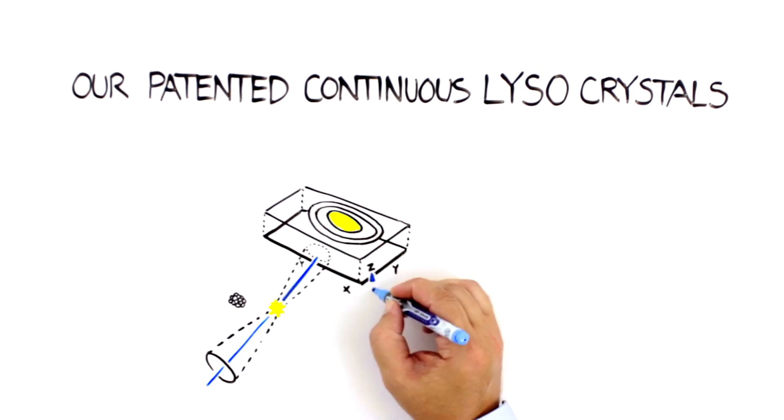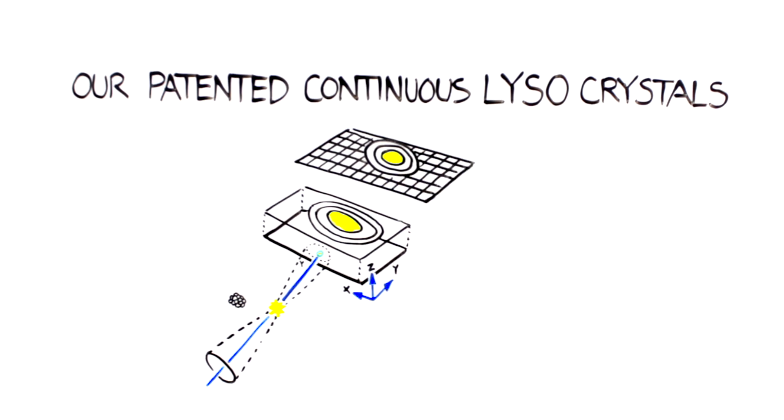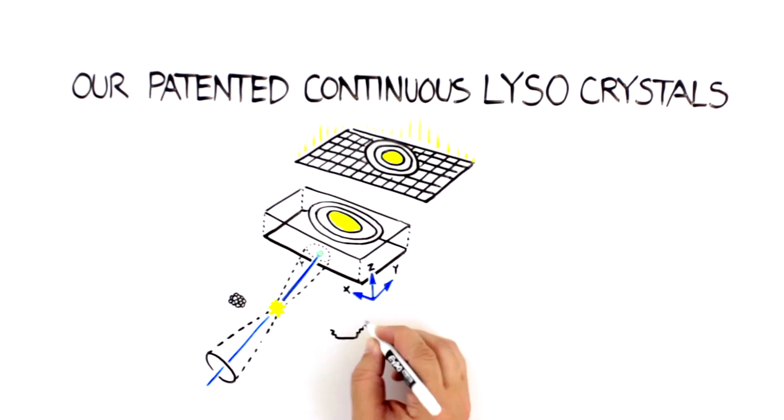High-resolution depth-of-interaction technology enables precise 3D localization of events, which in turn allows for constant and high spatial resolution when moving out of the center of the PET field of view.